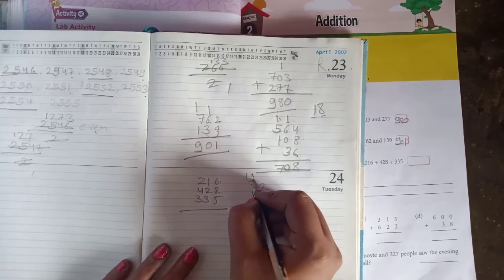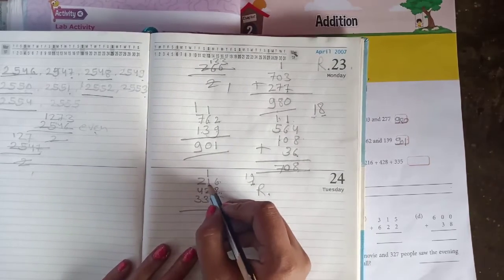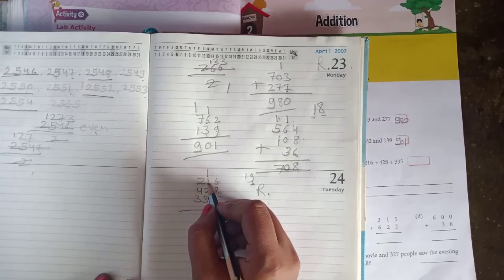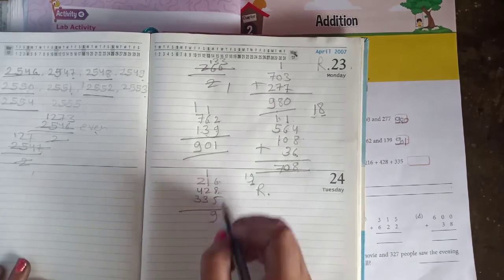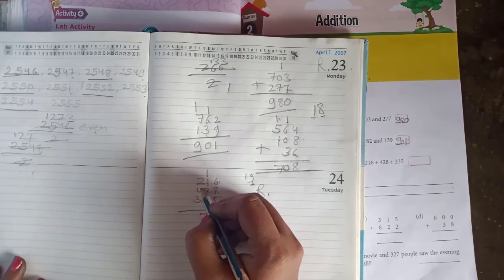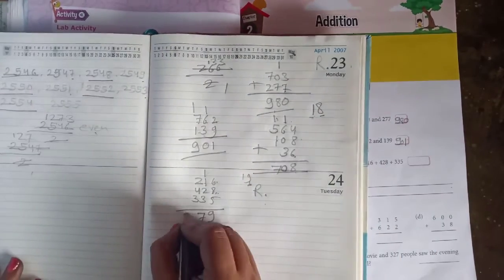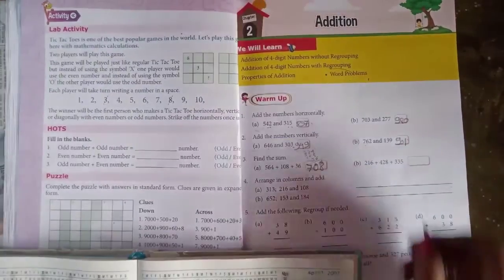So 19, it is always right here now, 9 and 1 is here. 1, 2, 3, 3 plus 3, 6 and 1 is 7, 7 is here. 2 plus 4: 6, 7, 8, 9. So 9 is here, 979 is the answer.